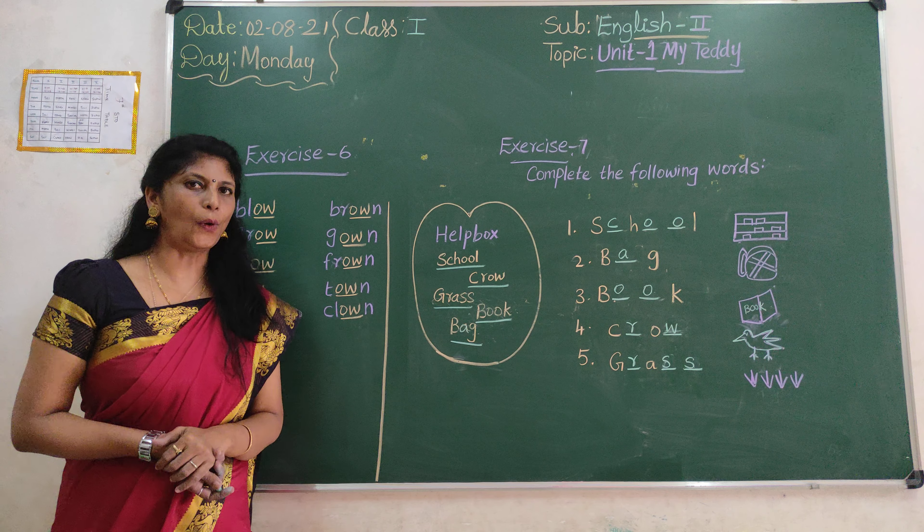Okay, children. Next, what is this? Crow. C-R-O-W, crow. Next, what is this, children? Grass. What is the spelling of grass? G-R-A-S-S, grass.